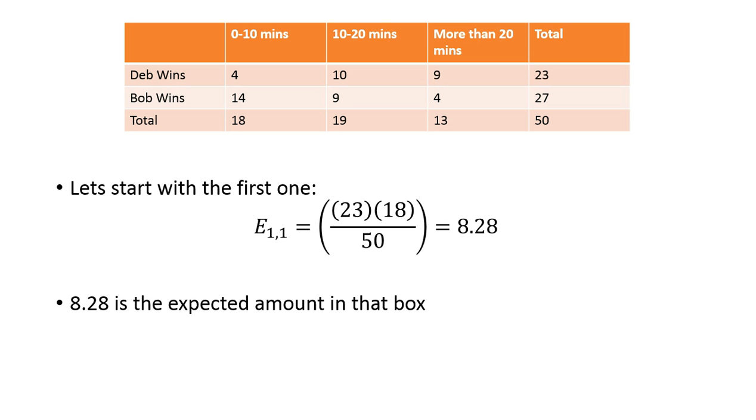So looking at this, let's start with the first one. So at 0 to 10, Deb is expected to win about 8, because we take 23, we multiply it by 18, the totals in each row and column, and then we divide it by the grand total, which would be 50. So the expected wins that Deb should have, if they were independent, should be about 8.28. So we're trying to see if they are independent. So if the warm-up doesn't matter, she should have gotten about 8 wins, she only had 4. So now we will statistically see if that is a difference or not. And you would go through and do this with every single row and column and every single box.